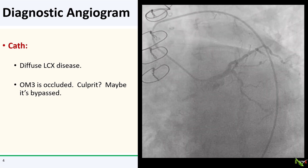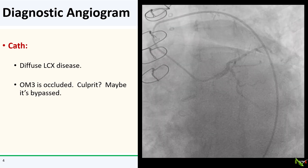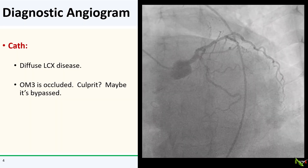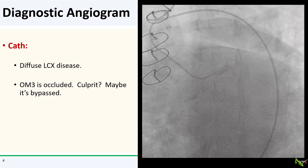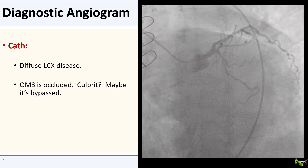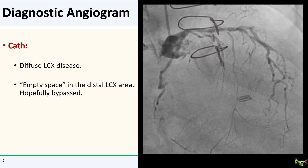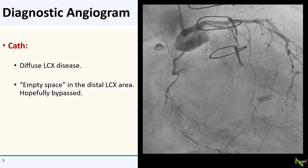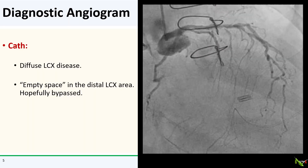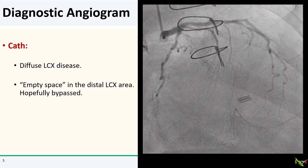Here's the CIRC. There is diffuse disease, and OM3 is occluded. I thought that might be the culprit, or maybe it is bypassed and there was an acute graft occlusion. In another view of the CIRC, we see a lack of blood vessels and an empty space in the distal CIRC area.